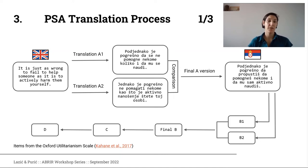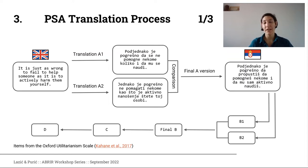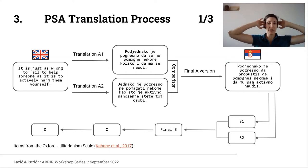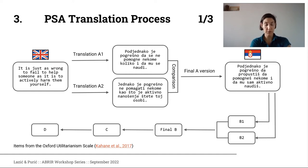The final translation method is the Psychological Science Accelerator translation process, which has a couple more stages compared to previous translation procedures. We will illustrate this process using items from the Oxford Utilitarianism Scale, which was also translated for the Psychological Science Accelerator 6 project on moral thinking across the world. We started from the original English version, and the same procedure was applied to all items, instructions, and response scales.